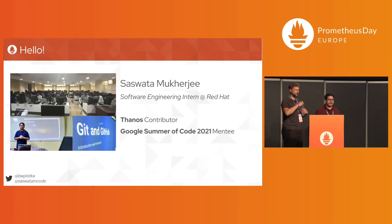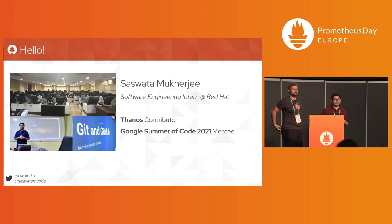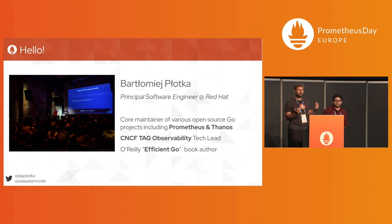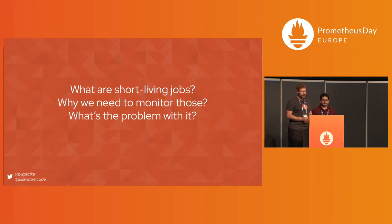Together with me, I have Saswata on stage, who flew over 20 hours with two stops from India — his first time in Europe. My name is Shashat Mukherjee. I'm a software engineering intern at Red Hat on the monitoring team, and I was a GSoC 2021 student developer under Bartek's mentorship in the Thanos project. I love working with distributed systems and observability-related technologies. And my name is Bartek Plotka — I'm principal software engineer at Red Hat. I maintain various projects in open source, mostly within Golang, including Prometheus and Thanos. I'm CNCF observability tech lead, and I also write a book with O'Reilly called Efficient Go.